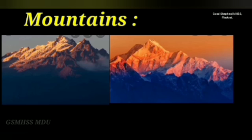The next physical feature is mountains. How many mountains are in India? India is home to 7 major mountain ranges with peaks over 1,000 meters. The most famous and highest mountain range is the Himalayas. The main mountains in India are the Himalayas, Karakoram, Aravalli, Satpura, Western Ghats, and Eastern Ghats.